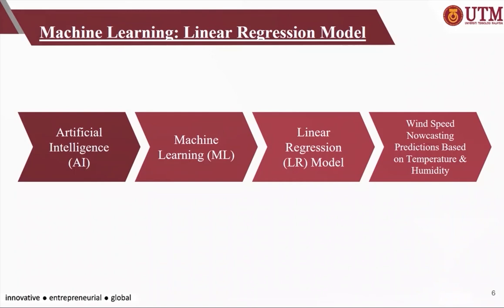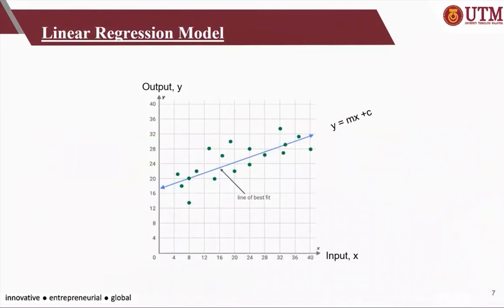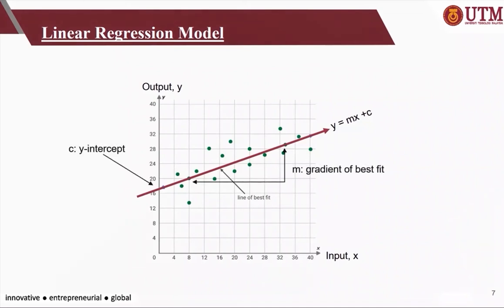A linear regression model is an algorithm of machine learning, and machine learning is a type of artificial intelligence technology that allows computers to learn from data. The linear regression model performs regression tasks to find the linear relationship between output and input, like finding the best fit line for a plot diagram. Taking output y and input x, the simplest relationship can be represented by the equation y = mx + c, where c is the y-intercept, or the value of y when x equals 0, and m is the gradient of the best fit line.